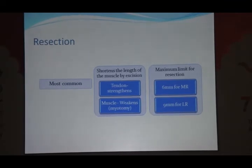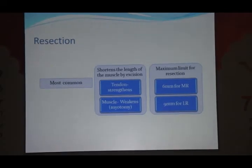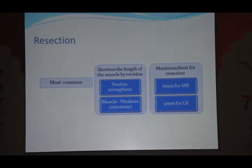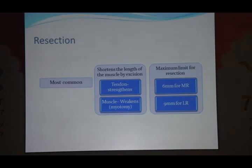Resection has its own limit. Once you keep on cutting the muscle, you reach a limit where the tendon ends. If you cut the muscle beyond that, it is basically a myotomy and will weaken the muscle. So there are limits of resection: for medial rectus it's around 6 mm and for lateral rectus it's around 9 mm. We have to do our resection within this limit.